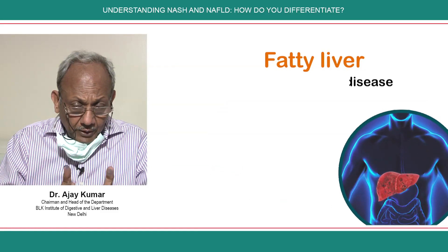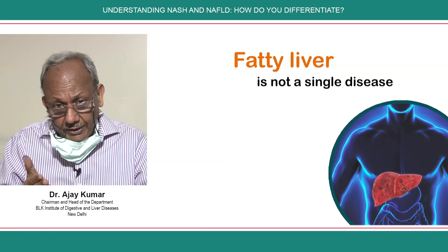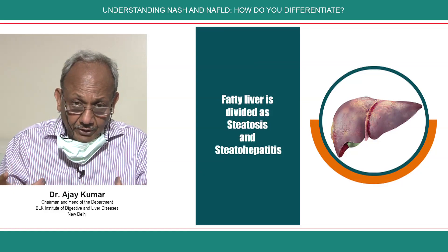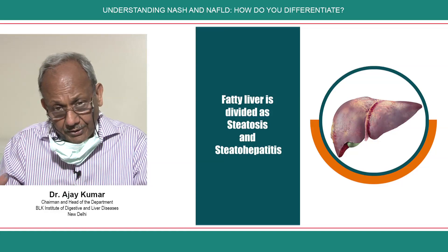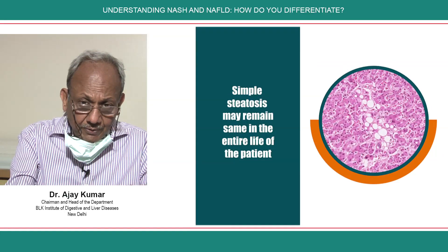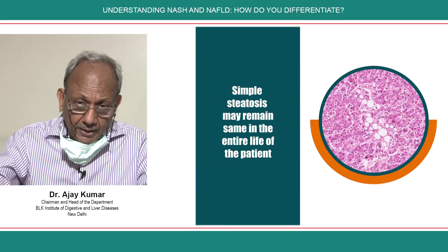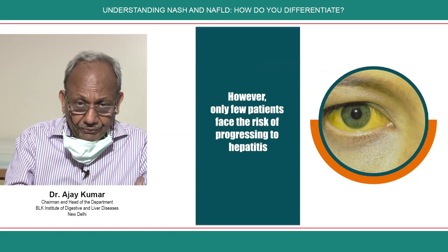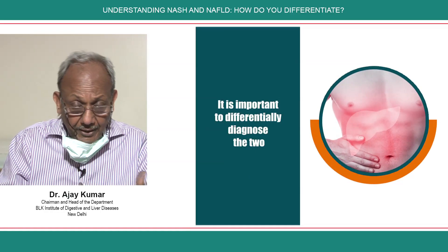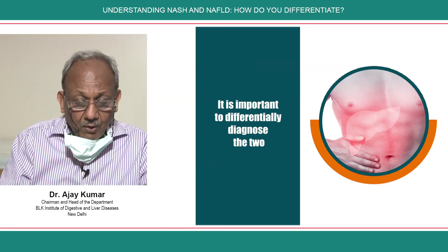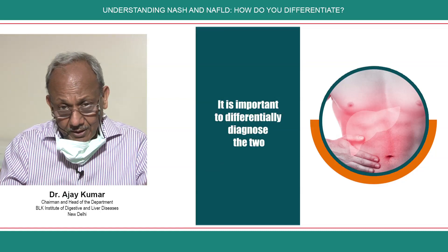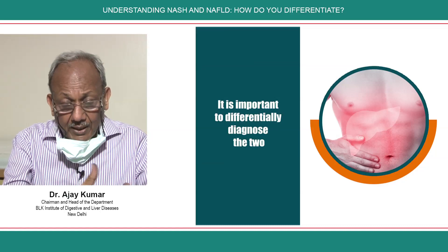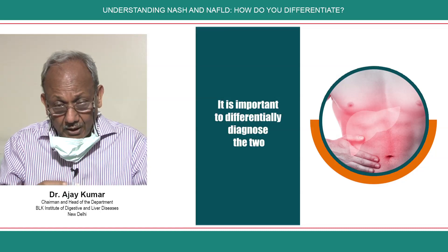In this brief summary, fatty liver is not a single disease. There are two types: simple steatosis and steatohepatitis. While simple steatosis may remain the same throughout the entire life of the patient, the majority are harmless. It's important to differentiate right at the outset which of the two we are dealing with. If you look at all fatty livers, majority — 60 to 70% — fall in the simple category, while about 30% have hepatitis which can progress.